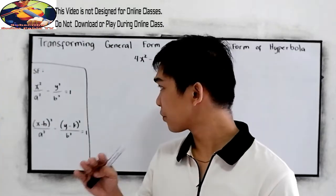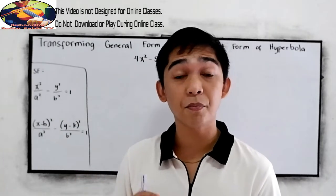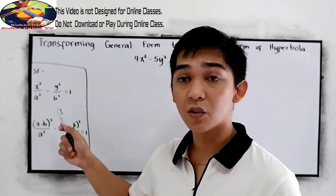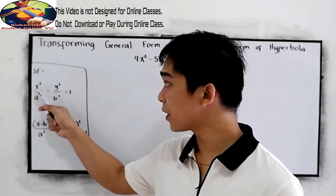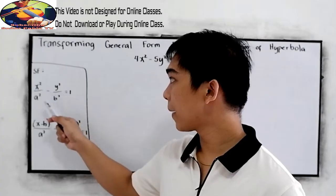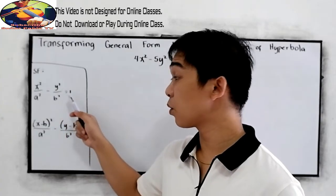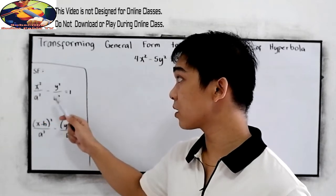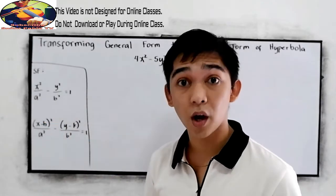So let's have first a short recall about the standard forms of the hyperbola. If the center is (0,0), we have this form: x squared over a squared minus y squared over b squared is equal to 1. Or it can be y squared over a squared minus x squared over b squared is equal to 1.